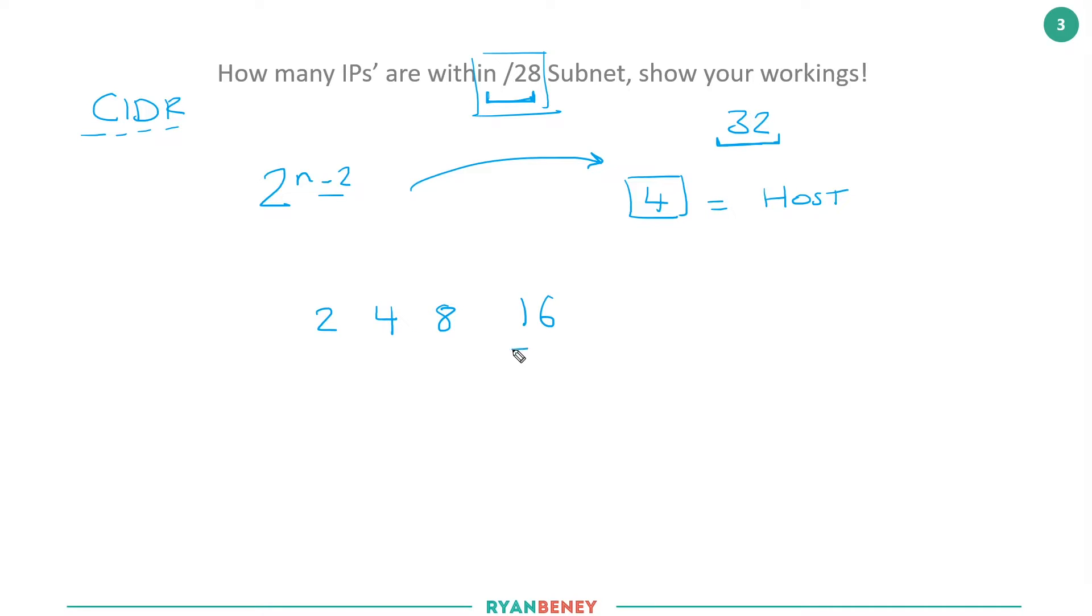Take away 2, that's 14. So I would say there are 16 IPs with 14 usable in a /28 subnet, because we have to take away the two addresses for the network and broadcast address. That's how I work it out. It's 2 to the power of how many bits are turned off, minus 2. However you got the answer may be different; ultimately, as long as it's the same answer.